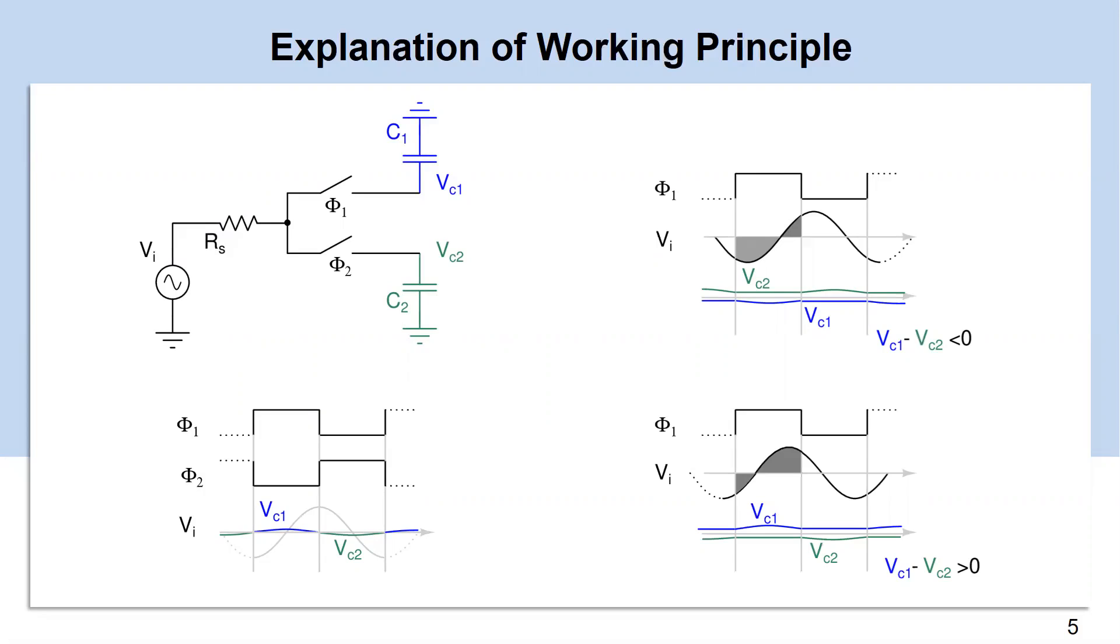Hence, it becomes clear that if VC1 minus VC2 is negative, then we need to impart a phase lag to the clock, and if it's positive, we need to impart a phase lead.